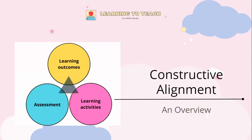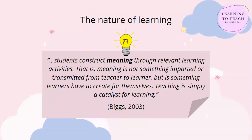Before going into the definition of constructive alignment, we must first understand what learning is. Learning is a process of constructing meaning. This understanding is underpinned by the constructivist learning theory, which postulates that knowing and how one comes to know is by meaning-making and constructing realities through activities, practice and experience. Hence, learning is an active behaviour.